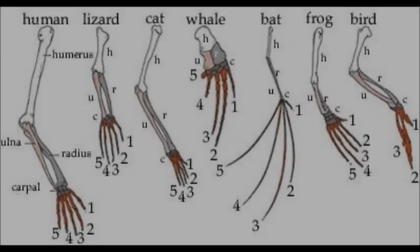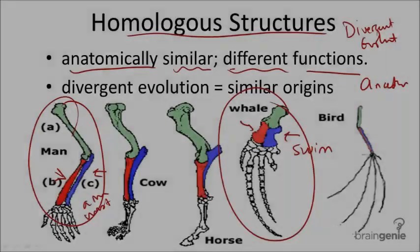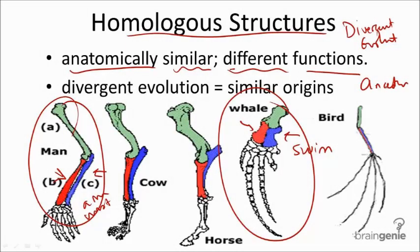Contrary to what some might think, two anatomical structures can look very different from each other and still be considered homologous. For example, the limb fragments between frogs and lizards look obviously different, yet they are considered homologous because they are governed under the same common principles: the humerus, the radius, and the ulna. The inference of homology suggests evidence that the species share a common ancestor.